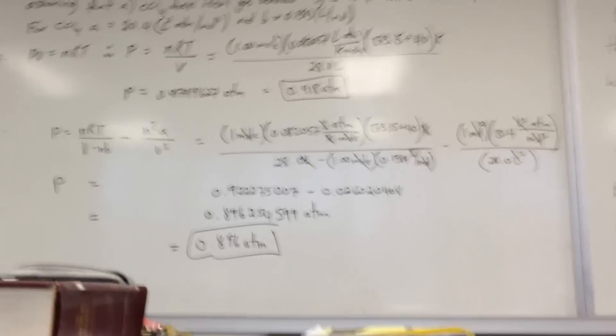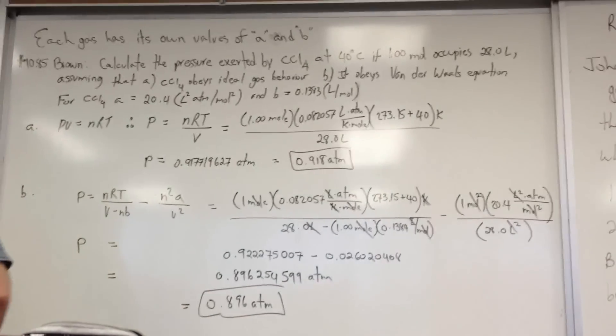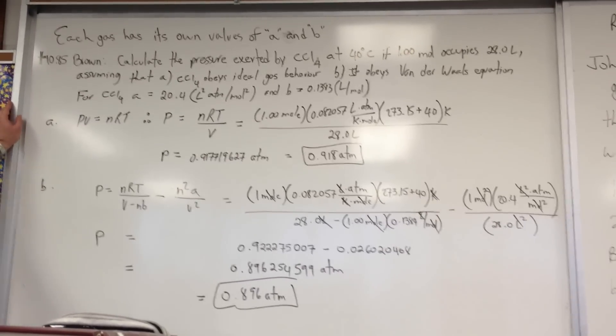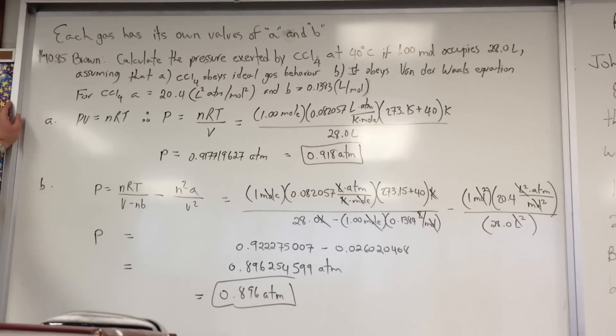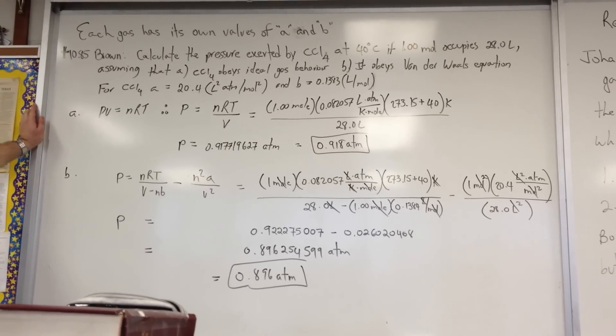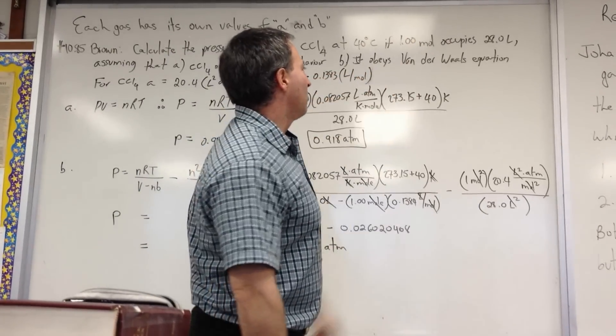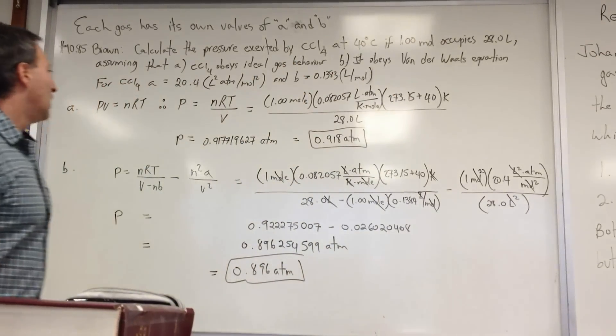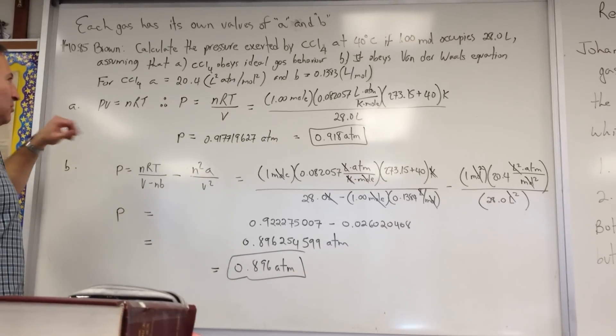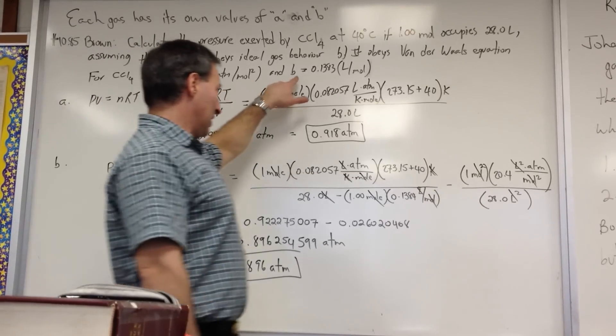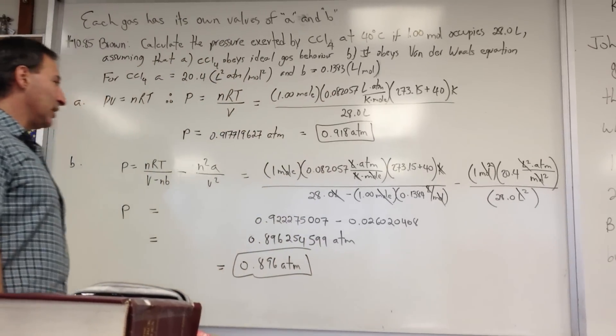How do we apply these things? Here's an example of a question from Brown's textbook, chapter 10, number 85. The question says, calculate the pressure exerted by carbon tetrachloride at 40 degrees Celsius if one mole occupies 28 liters. Assuming that A, carbon tetrachloride obeys the ideal gas behavior, and B, it obeys Van der Waals values. So we need two values, the values of A and B. For carbon tetrachloride, A is 20.4 liters squared atmosphere per mole squared, and B is equal to 0.1383 liters per mole.